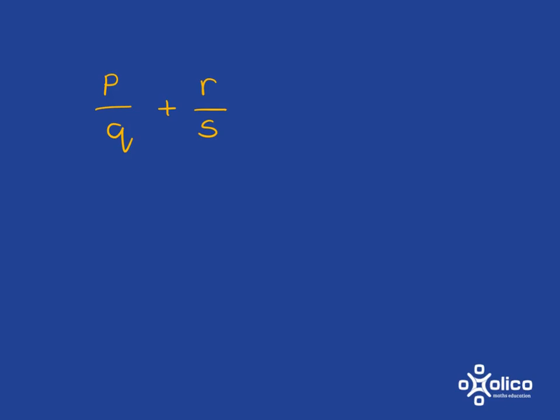If we have a look at this, p over q plus r over s. Very, very tempting for people to do this, to say that's just p plus r over q plus s. But that is completely, totally and utterly wrong.